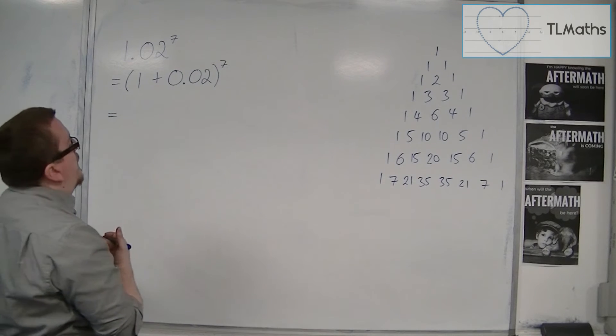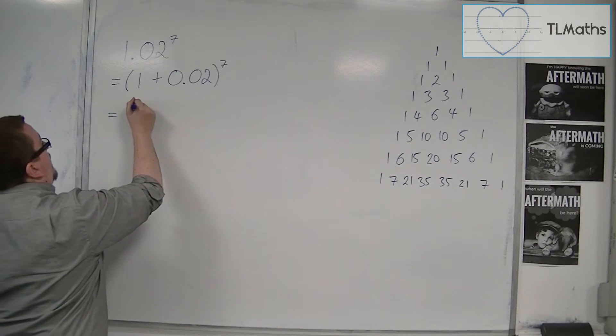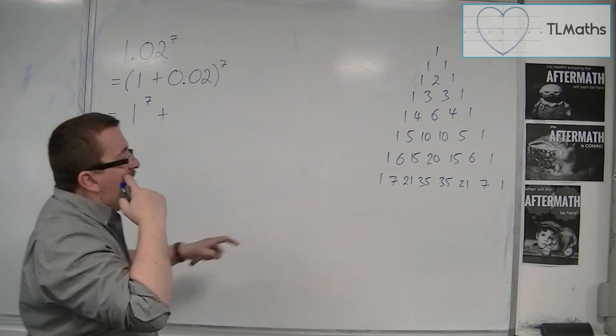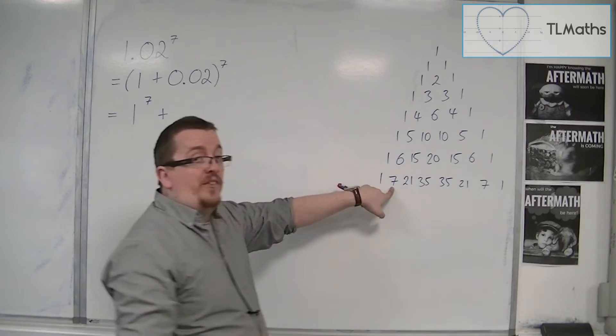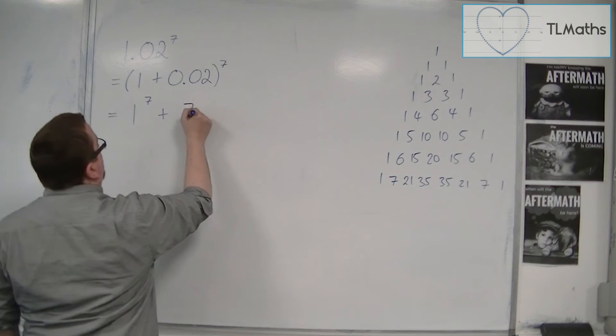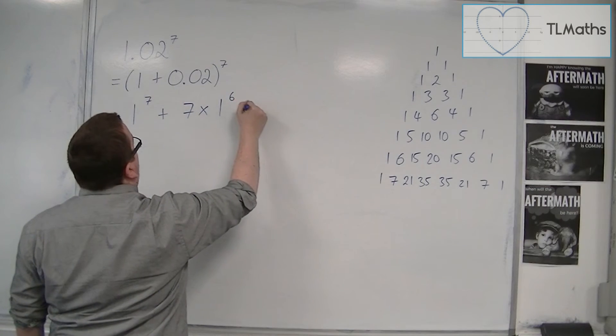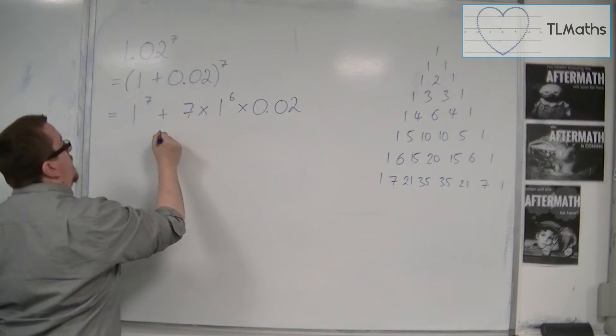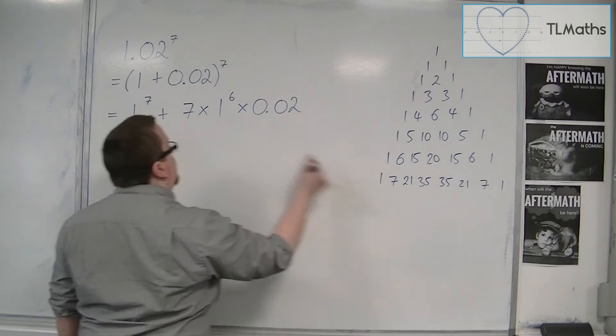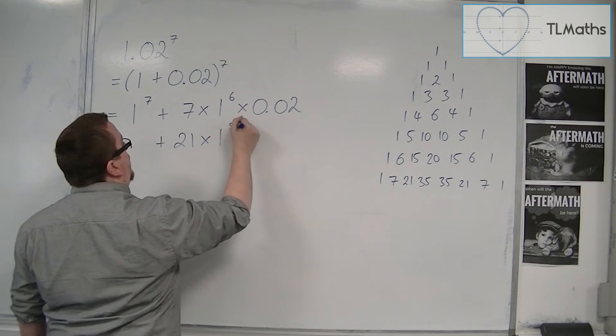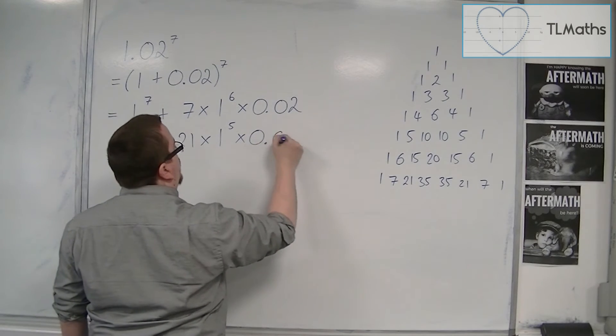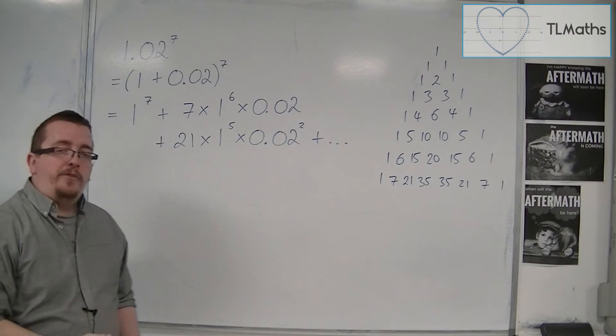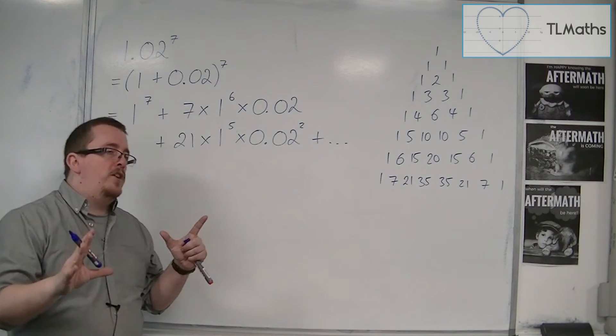So how would this be? Well, if I expanded this, I would have 1 to the power of 7, plus then the next term in Pascal's would be 7. So 7 times 1 reduces in power and the 0.02 increases in power, plus 21 times 1 reducing in power and 0.02 increasing in power. There's going to be several other terms to this, but I'm not going to worry too much about those. I just want it to a reasonable degree of accuracy and this should give me that.